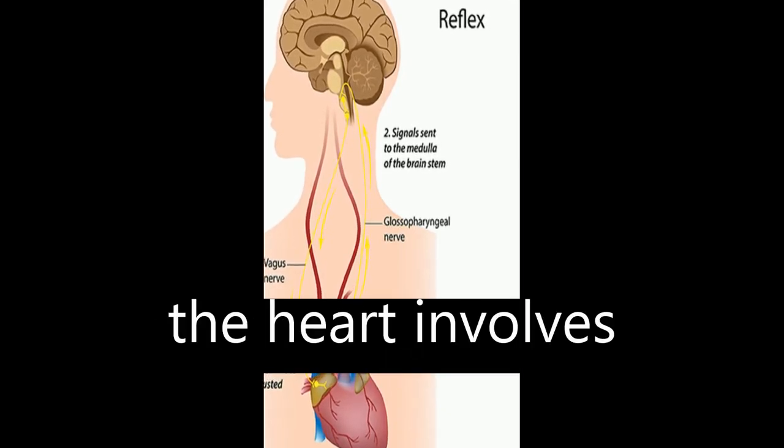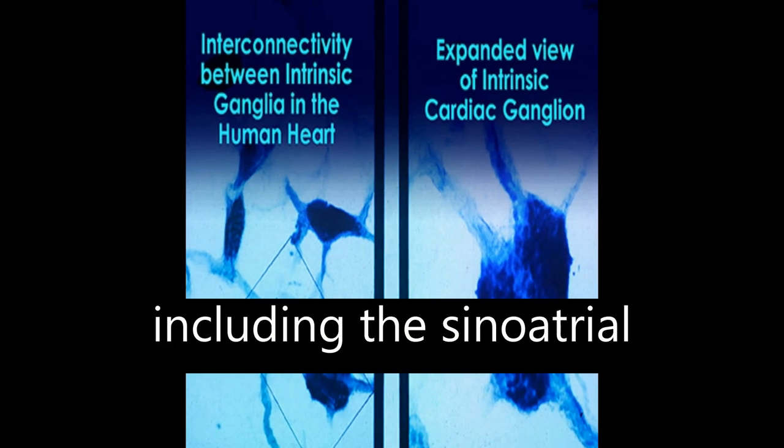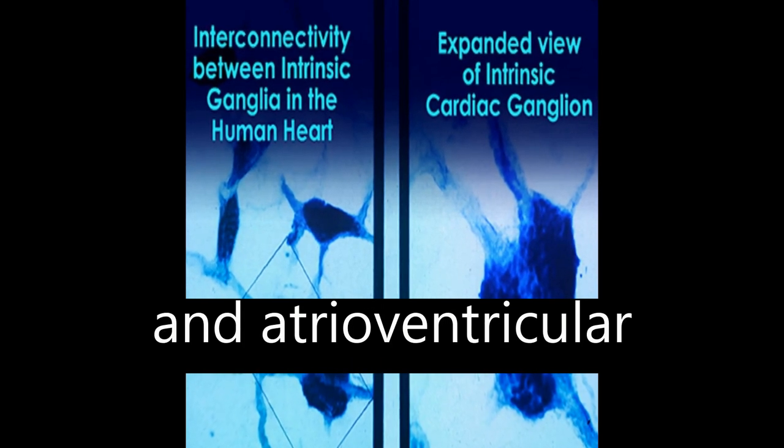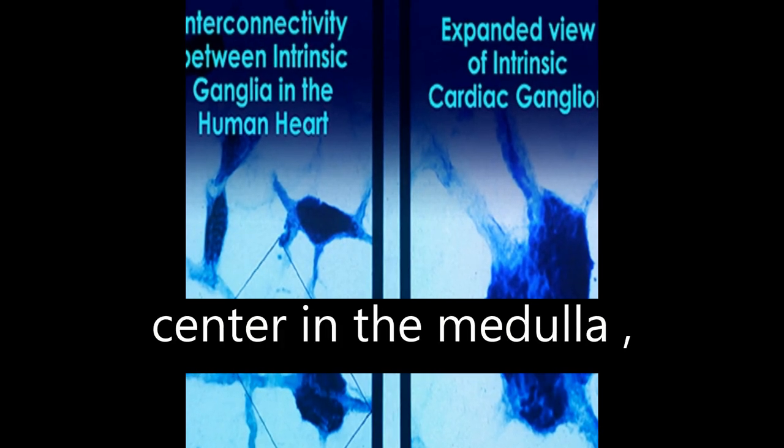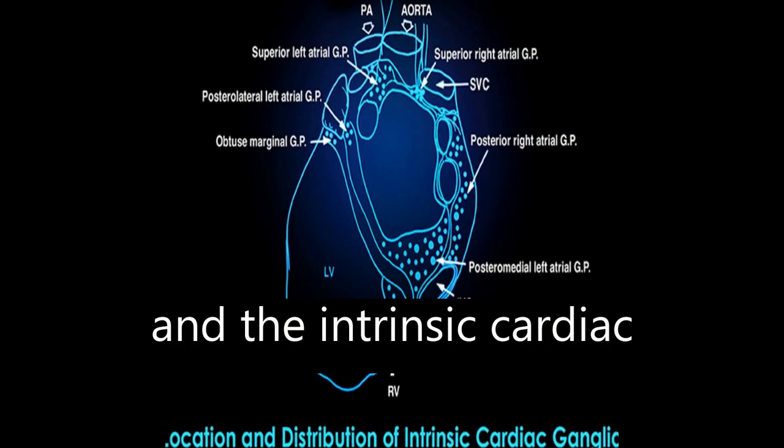The neural regulation of the heart involves several components, including the sinoatrial and atrioventricular pacemakers, the cardiovascular regulation center in the medulla, and the intrinsic cardiac nervous system.